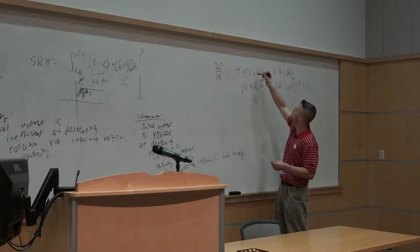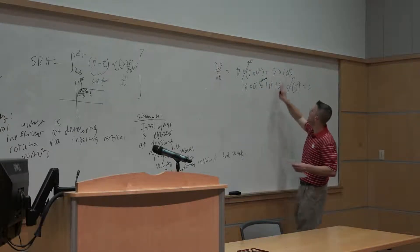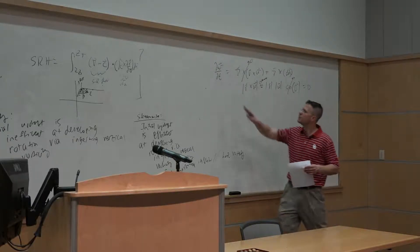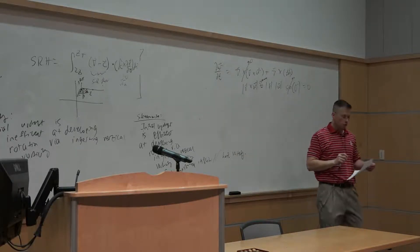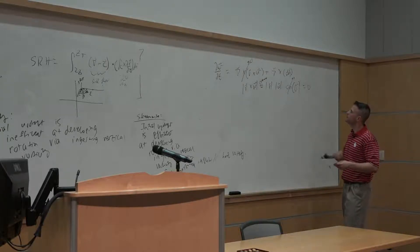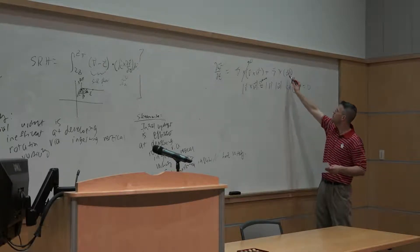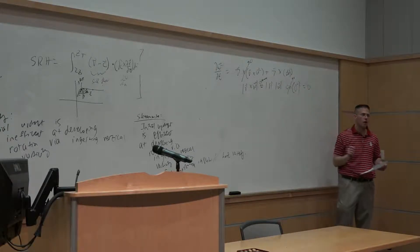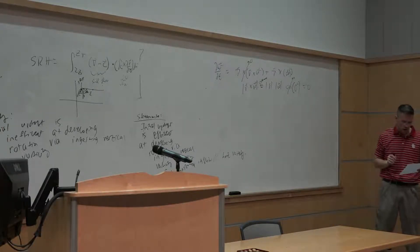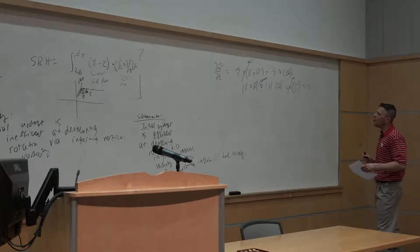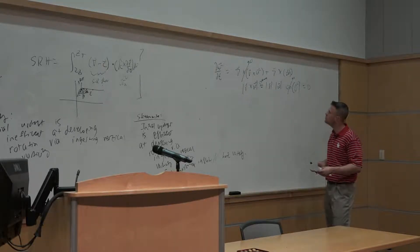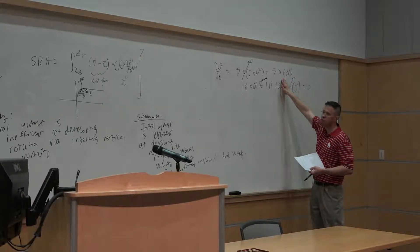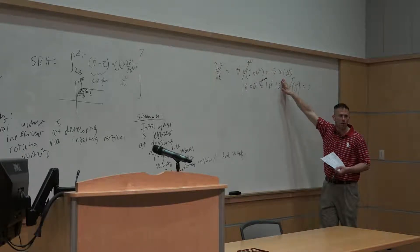And that says that our changes in vorticity with respect to time is only going to be a function of del cross this, what we're referring to as buoyancy distributed along the vertical axis over here, saying that all changes in horizontal vorticity are going to be the result of spatial gradients in our buoyancy over here.